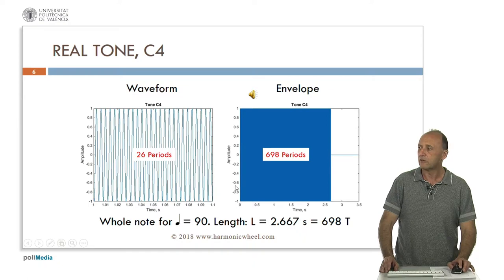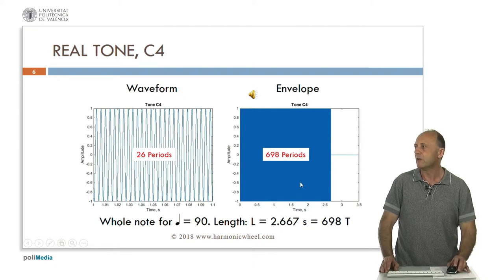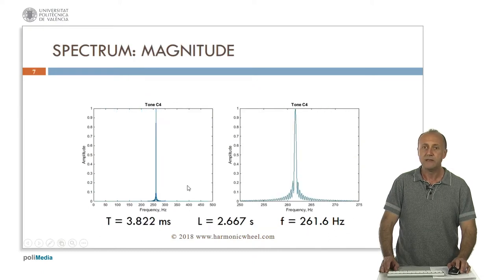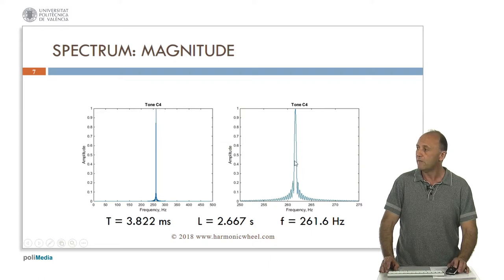But in the case of a real tone with a finite length — for example, this is a whole note for quarter note equal to 90 — the length is 2.667 seconds. We have represented them here, but because there are near 700 periods we cannot appreciate the waveform, only the maximum and minimum values. This is called the envelope. In this case the spectrum is not a very thin line, and the width of the main part of the line is 2 divided by the length, which is 0.75 Hertz.